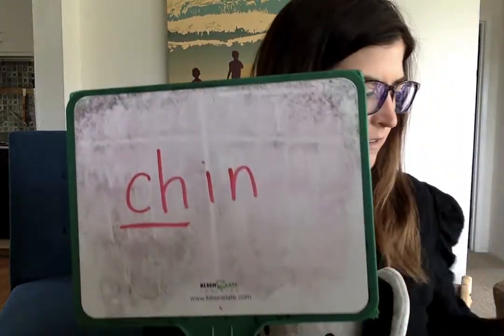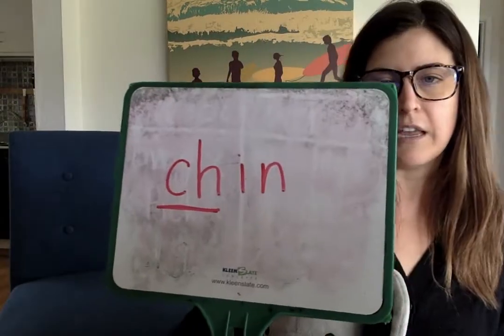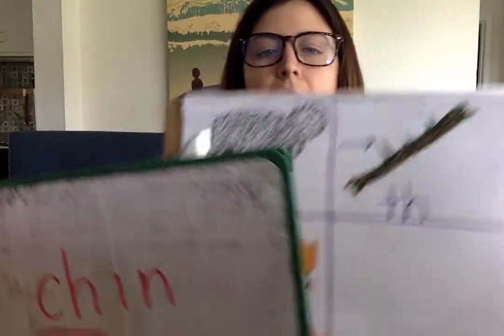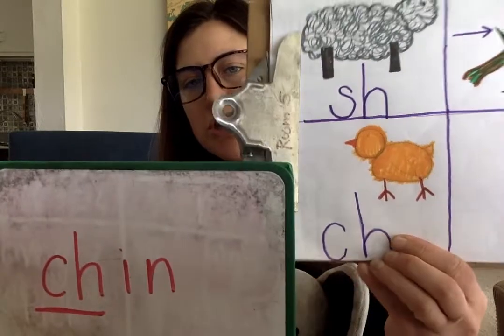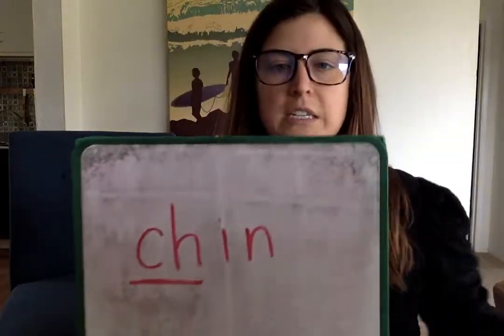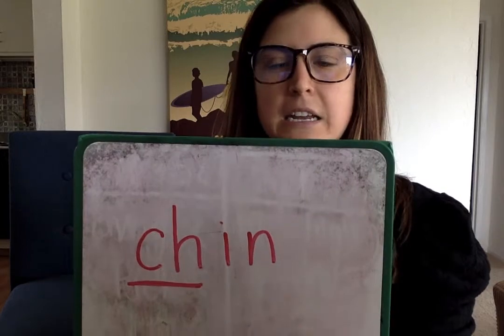Mabel will show us where that part of our body is. The hokey pokey is a little song that you sing and it tells you to put a part of your body in and out and in and out. So here's the first part of our body — think about what it could be. I see that C and H say ch, so this word is chin.